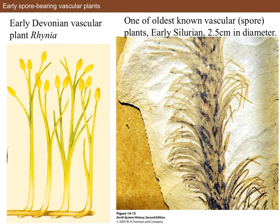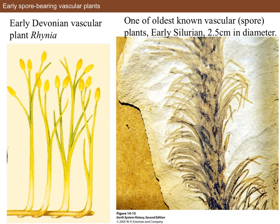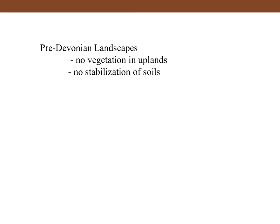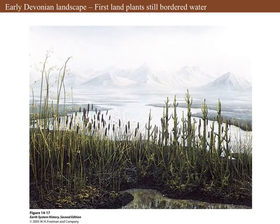Here are some early spore-bearing vascular plants. The Rhynia, found in geological deposits in the British Isles and other places, hails from the early Devonian era. One of the very earliest ones was found in the early Silurian and is about two and a half centimeters or an inch in diameter. Imagine what it was like in those pre-Devonian times — there was no vegetation at all outside of the water, meaning soils were not stabilized by any plant roots, so the landscape changed. When plants came, they stabilized the situation, arising on the edges of water because they had descended from aquatic ancestors.